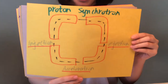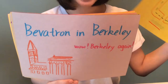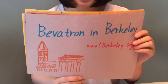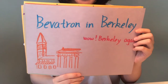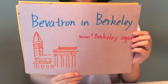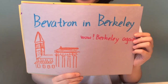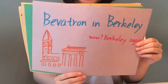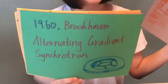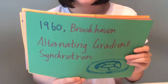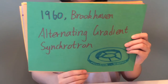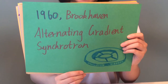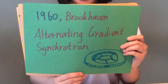At the same time, the Bevatron at the University of California, Berkeley was created and designed to accelerate protons to generate anti-protons. A few years later, again in Brookhaven National Laboratory, the alternating gradient cyclotron was created.